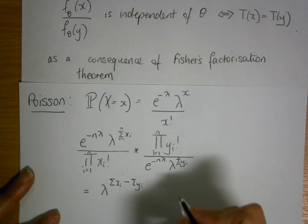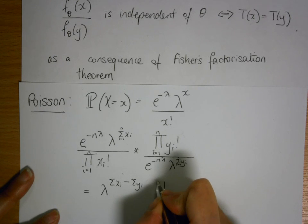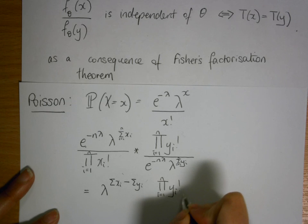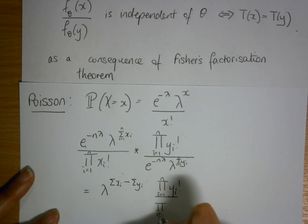And then you also have the product i equals 1 to n of yi factorial...